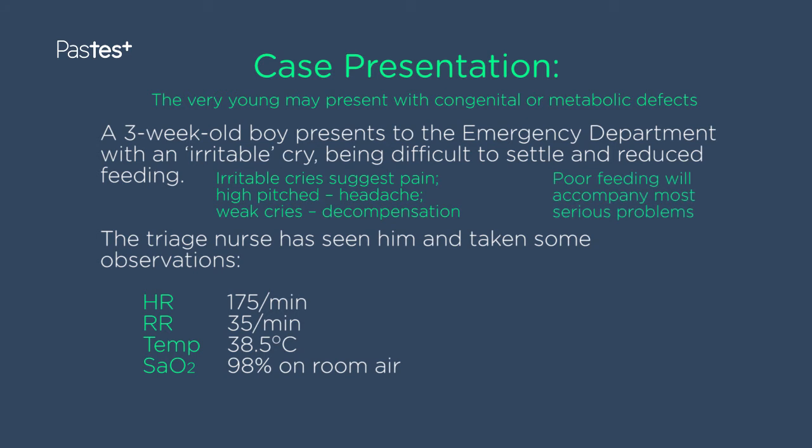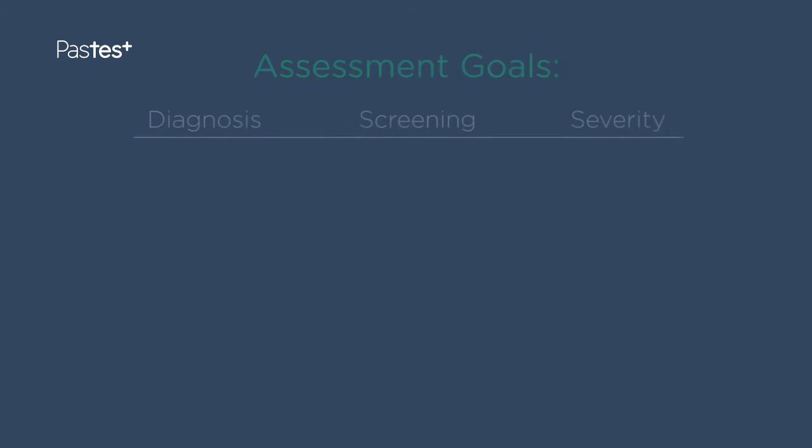Poor feeding is seen in most serious situations — it's like the baby's level of activity when it can't tell us by any other means that it's not well. A feeding history is particularly important to assess severity. Tachycardia and tachypnea could be just the fever, but they could also be signs of cardiorespiratory collapse.